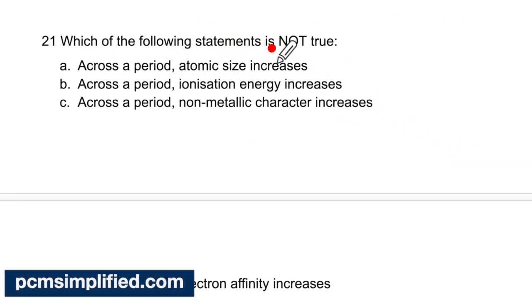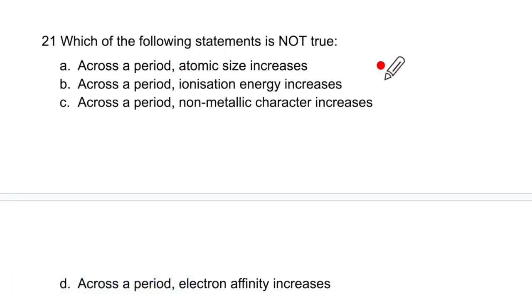Which of the following statements is not true? Across the period atomic size decreases from big size to become small size. So what they are telling increases is not true. So this is the correct option. Across the period IP increases, electron affinity also increases. Group 7 has more electron affinity is correct.